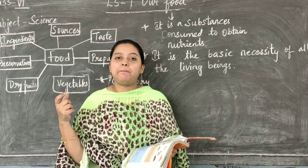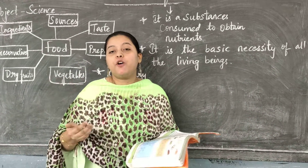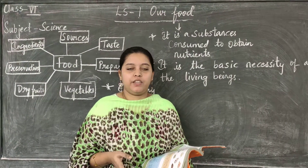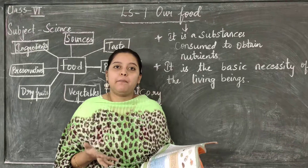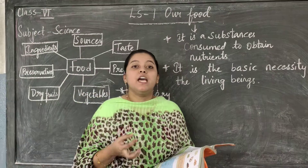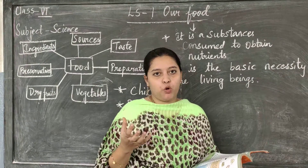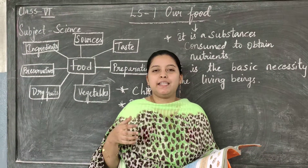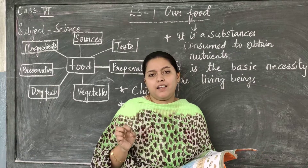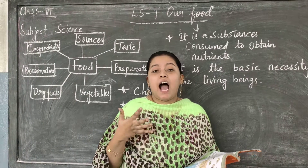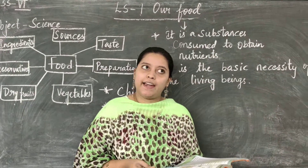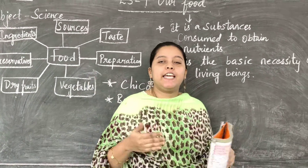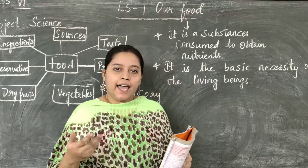Peanuts contain a lot of protein — that's why people who go to the gym eat peanut butter and eggs to build their body. However, many people are allergic to peanuts and they are hard to digest. So we have now learned that we eat the entire plant — stem, leaves, roots, and seeds.